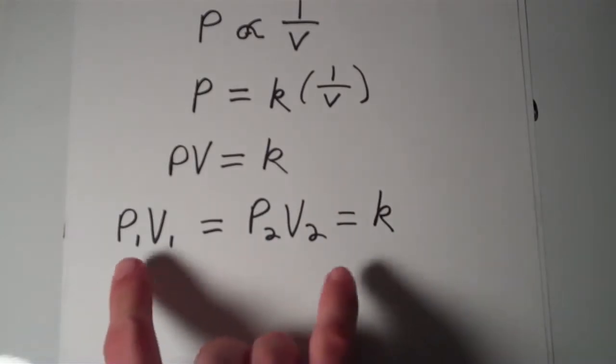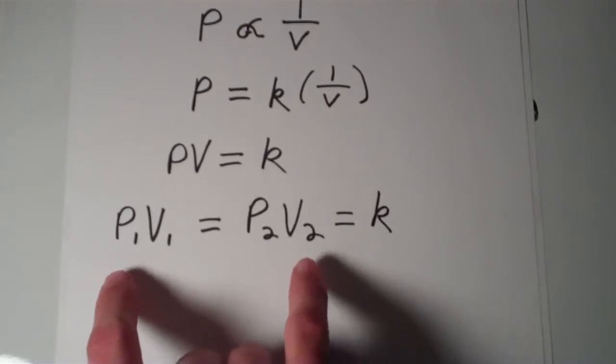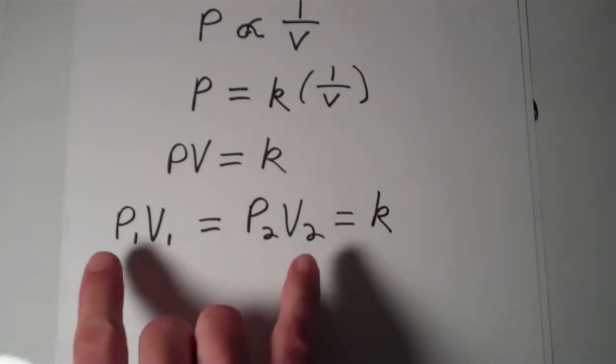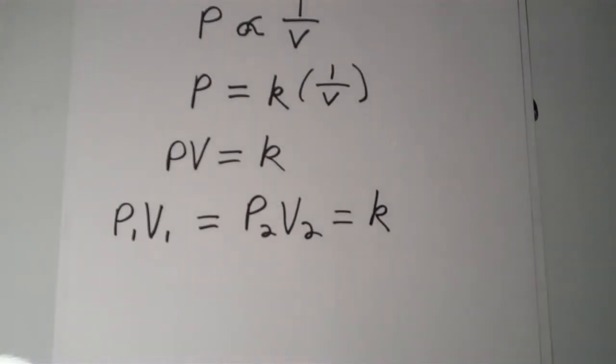So this two-point form of the Boyle's Law equation is helpful because it can be used to solve problems. Any three of these things—P1, V1, P2, or V2—if we know any three of those, then we can solve for the unknown. So let's go through a problem.